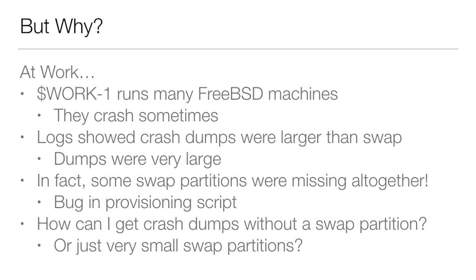My previous job ran many FreeBSD machines, and they tended to crash sometimes. When a crash happened, I'd get a ticket saying go diagnose this thing. I went to find the crash dumps — there were no crash dumps. The logs showed the crash dumps were larger than the swap space, with dumps over 32 gigs and sometimes 64, depending on the machine. Some swap partitions were missing altogether due to a bug in the original provisioning script. I couldn't reformat every machine, so I had to figure out how to get crash dumps without a swap partition, or with a very small one relative to the dump size.